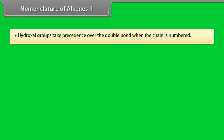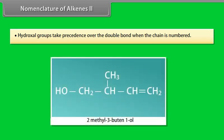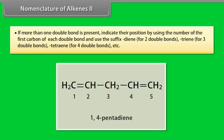Nomenclature of alkenes continued. Step 7: Hydroxyl groups take precedence over the double bond when the chain is numbered. This compound is 2-methyl-3-butene-1-ol. Step 8: If more than one double bond is present, indicate their positions by using the number of the first carbon of each double bond and use the suffix -diene for two double bonds, -triene for three double bonds, -tetraene for four double bonds, etc. For example: 1,4-pentadiene.